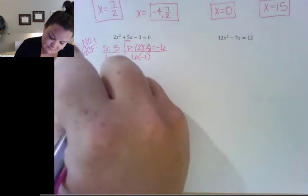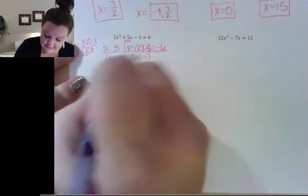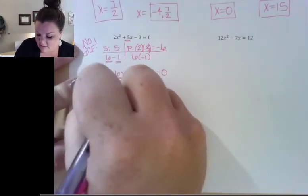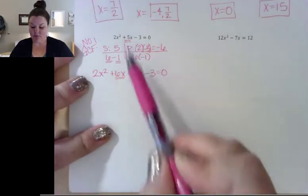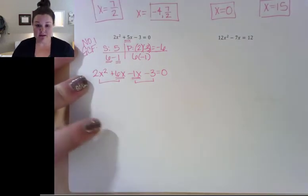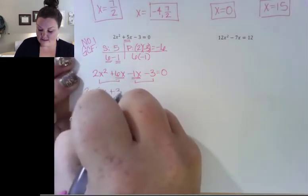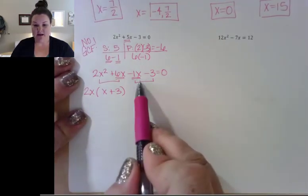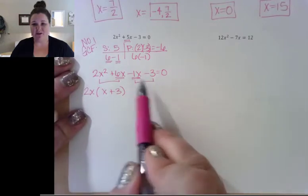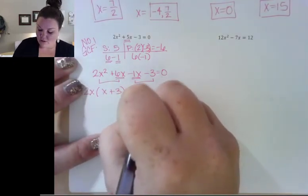My first term is still 2x squared. When I plug my 6 and negative 1 in, I label them with x: plus 6x minus 1x, minus the 3. All I did is replace that middle term with the numbers from my chart, and now I can group. Out of the first grouping, they have a 2x in common, and I'll be left with x plus 3. Out of the second pairing, since I have two negatives, I'm going to factor out a negative 1, which will leave me with a positive x plus 3.